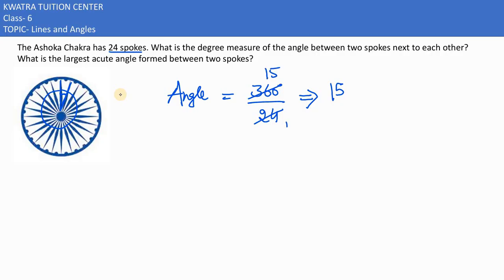So the angle formed between 2 consecutive spokes is 15 degrees. They also ask: what is the largest acute angle formed between 2 spokes? The answer is still 15 degrees, since that is the angle between any 2 adjacent spokes.